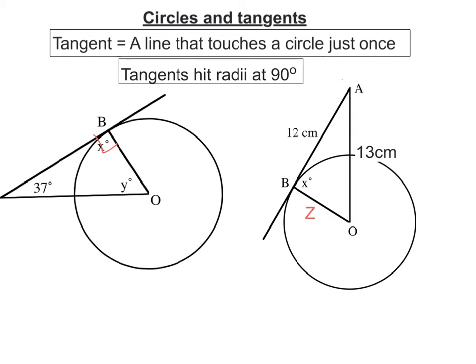So we can use that to work out what y is. y is going to be 180 degrees — 180 degrees in a triangle — take away 90, take away 37. So my answer is going to be 53. So y is 53.